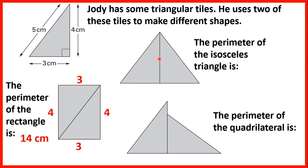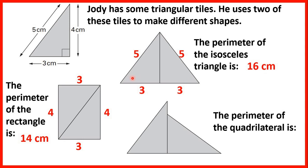Now let's look at the next shape. What is the perimeter of the isosceles triangle? We can see that we have 5 and 5 because this is the longest side of the triangle, and then 3 and 3. So altogether 5 plus 5 plus 3 plus 3 is 16. The perimeter of the isosceles triangle is 16 cm. This triangle is isosceles because it has 2 sides of the same length and 2 angles which are of the same size.